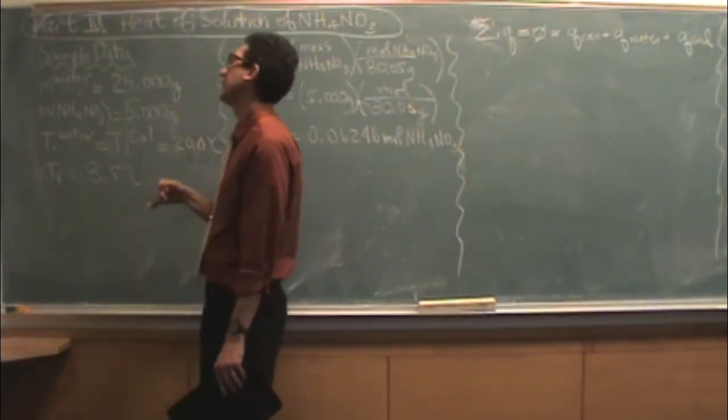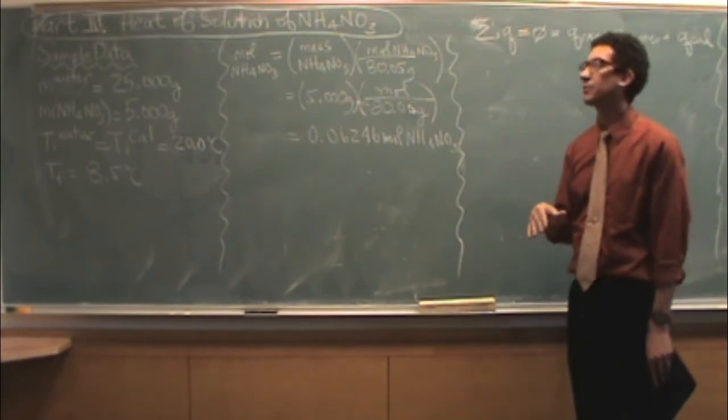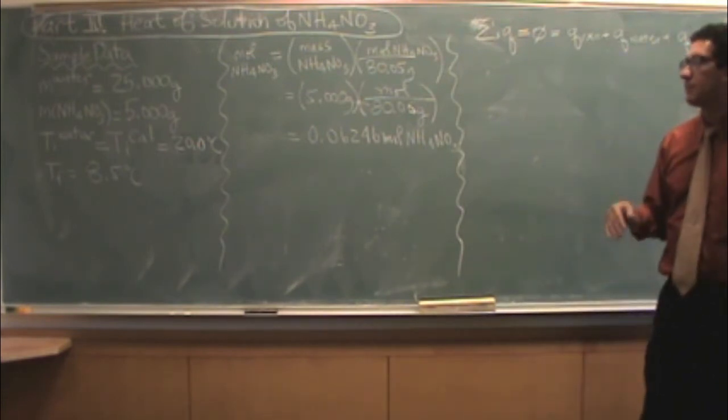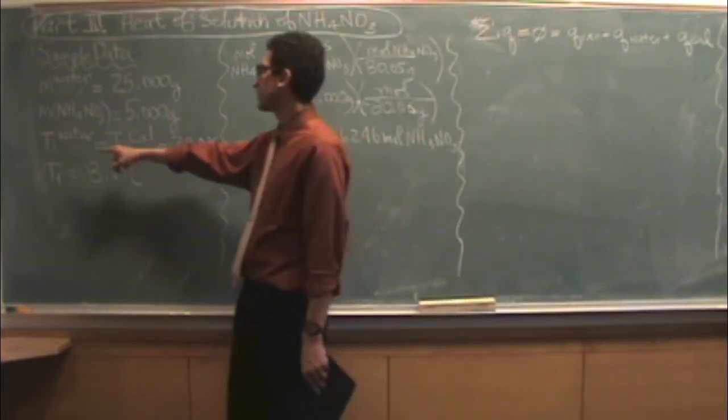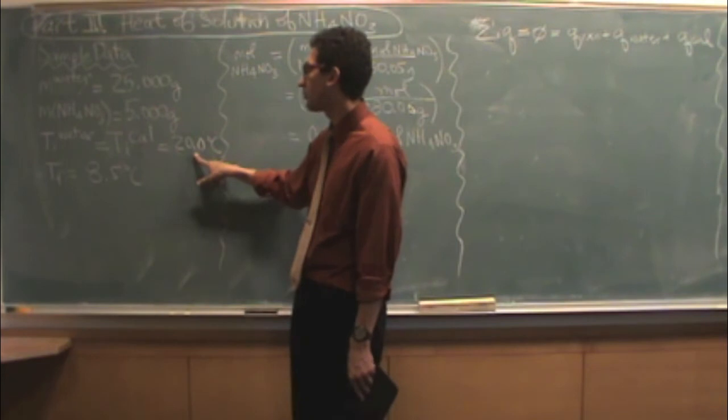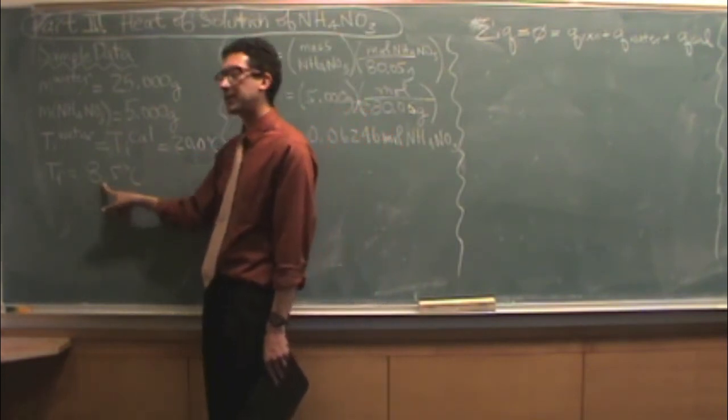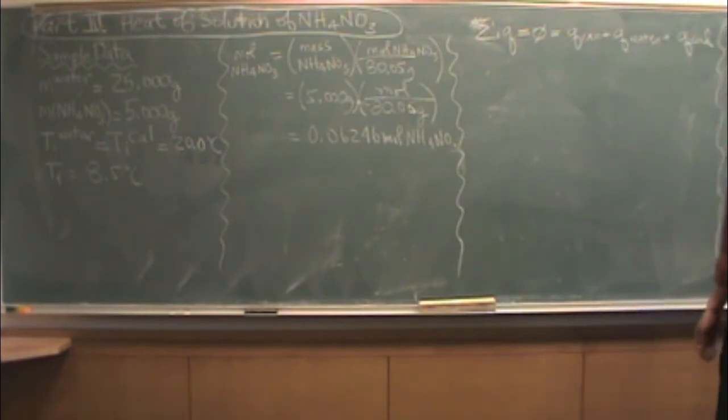First, our sample data, again may or may not match with your data. The mass of the water is 25 grams, the mass of ammonium nitrate is 5 grams, and the initial temperature of water, remember that's the same as the initial temperature of the calorimeter, that's 20. T final, in our case, we got 8.5. So it did cool down, which is what we expect.